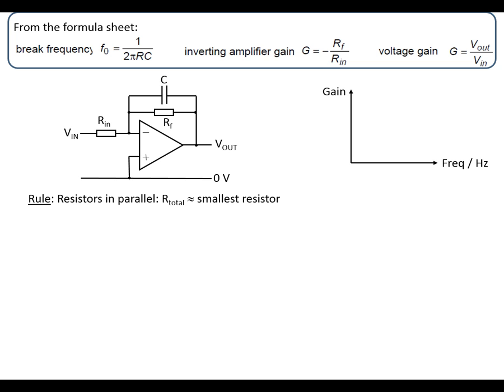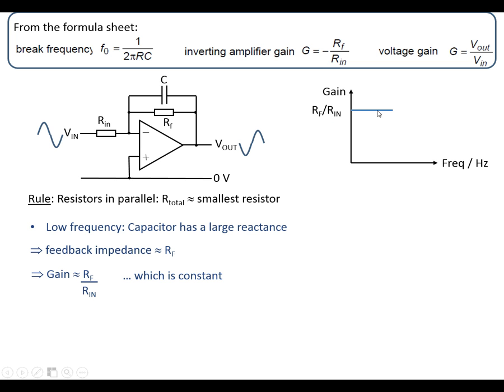The rule we're going to use here is that resistors in parallel, the total resistance is approximately the smallest resistor of the two if one of them is significantly larger than the other. At low frequencies, the capacitor has a large reactance, so the feedback impedance is approximately the resistor RF, which means the gain is constant RF over Rin.